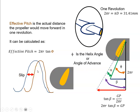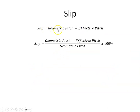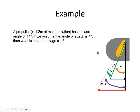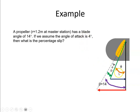So the definition of slip: slip is the difference between geometric pitch and effective pitch, and it's normally presented as a percentage. Let's have a look at an example. We have a propeller where the radius out to the master station is 1.2 meters. At the master station the blade angle is 14 degrees, and we're going to assume the angle of attack is 4 degrees. What is the percentage slip?